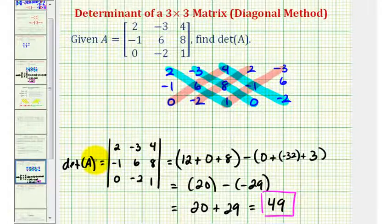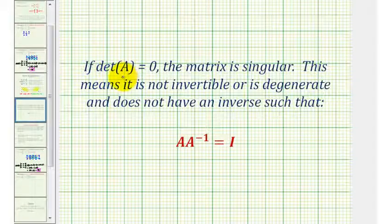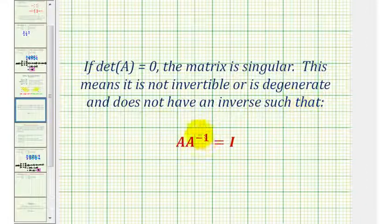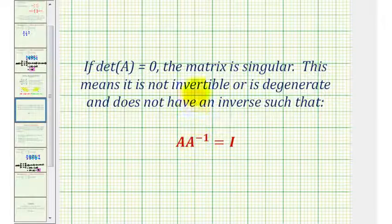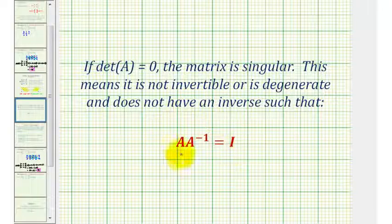Before we go, I want to discuss some vocabulary. If the determinant of a matrix is equal to zero, the matrix is called singular, meaning it is not invertible — it is degenerate and does not have an inverse such that A times A inverse equals the identity matrix. In our case, since the determinant was forty-nine, our matrix does have an inverse that satisfies this equation.